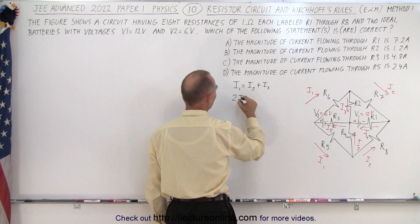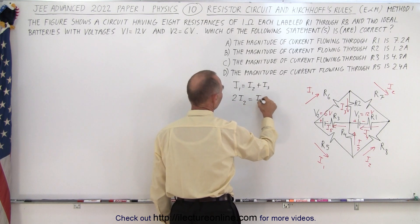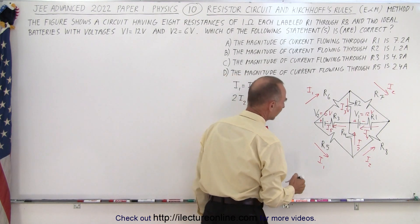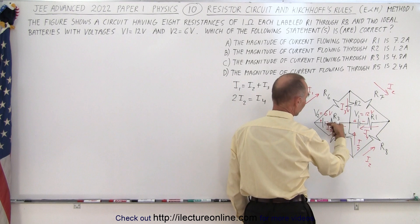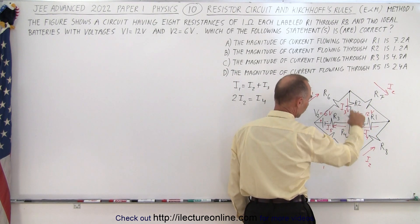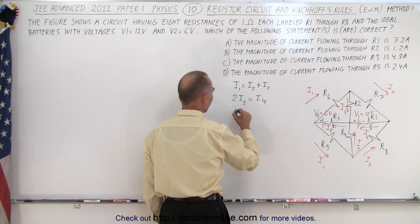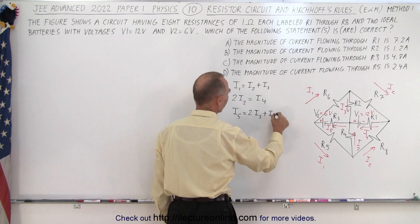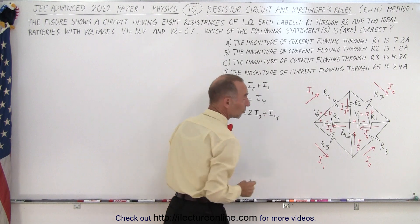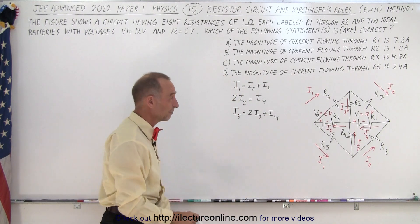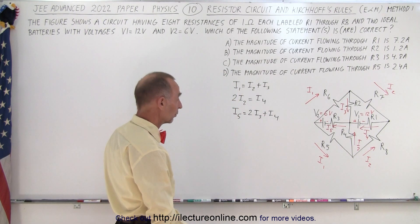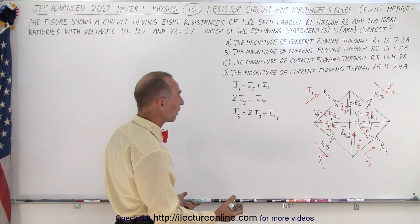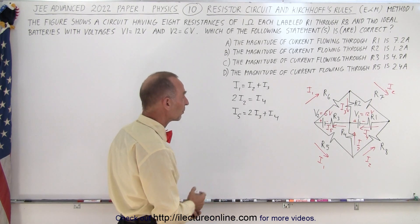Then we can say that I2 plus I2 must equal I4. So 2I2 must equal I4. And then finally here we can see that this current will be the sum of I4 plus 2I3. So we can say that I5 is equal to 2 times I3 plus I4. So now we have three equations.